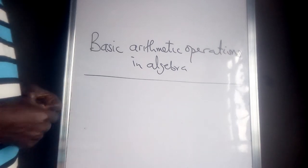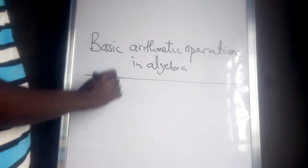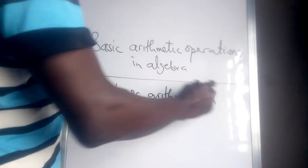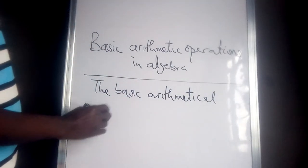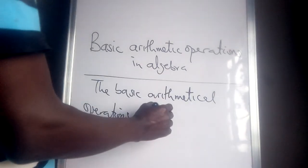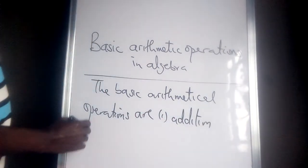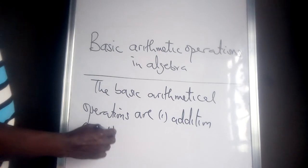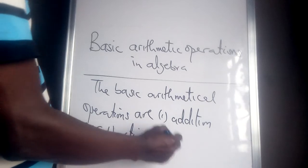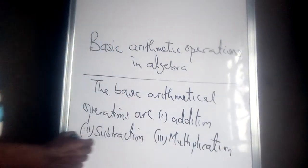What are the arithmetic operations that we have? The basic arithmetical operations are: Addition, Subtraction, Multiplication, and Division.